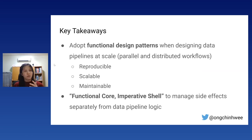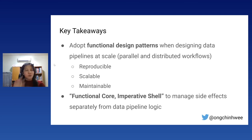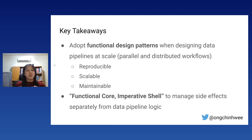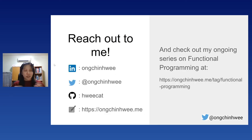Key takeaways: adopt functional design patterns when designing data pipelines at scale, especially for parallel distributed workflows, to ensure pipelines are reproducible, scalable, and maintainable. On top of that, use the functional core/imperative shell design pattern to manage side effects separately from data pipeline logic. Thank you very much — you can reach out via the social media links and check out my ongoing series on functional programming at the provided link.